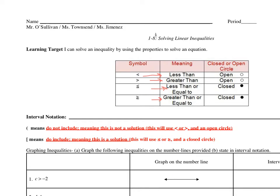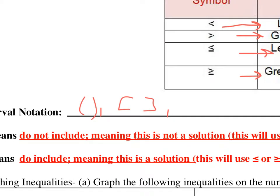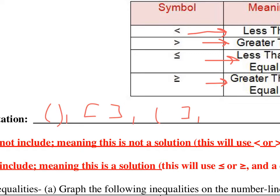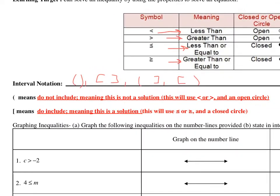Interval notation is something that you'll be seeing pop up in our class — not frequently, but it will pop up. That's simply when you use parentheses in either direction, or brackets in either direction, or a combination of both. When you have a parenthesis, that means you do not include that value in your solution — it will use less than or greater than and will be an open circle. When you have a bracket, it means do include — it is part of your solution, using less than or equal to or greater than or equal to, and it will be a closed circle on your number line.